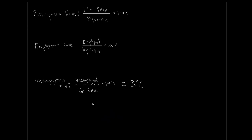That's why we have the employment rate — it tells us what percentage of our overall population is employed. The three metrics we'll utilize as we move through the semester: the unemployment rate is the big one we'll carry forward. The participation rate and employment rate are important too, but not nearly as central as the unemployment rate.